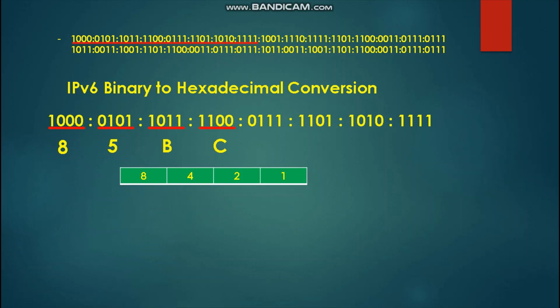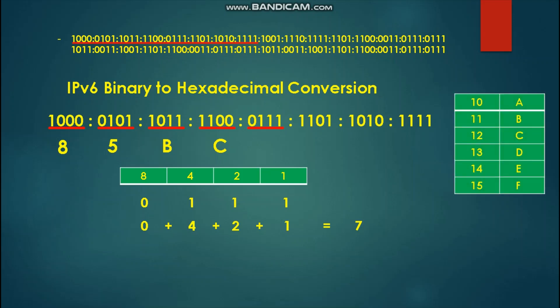Next, we solve for 0-1-1-1 and place it under our table. The values are 4 plus 2 plus 1, equal to 7. We can immediately place 7 as our hexadecimal result without needing the letter table.